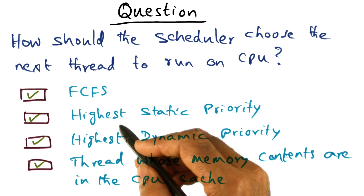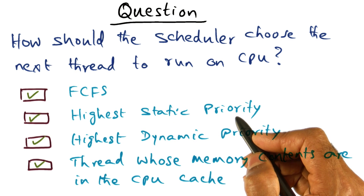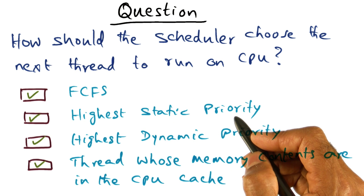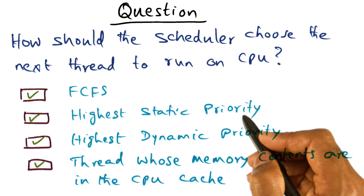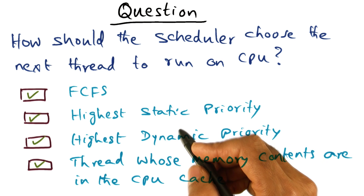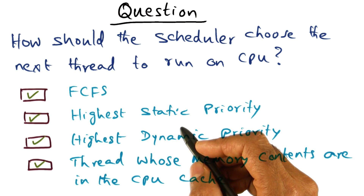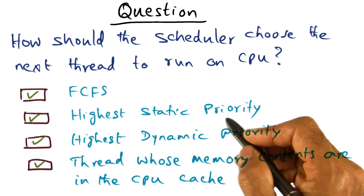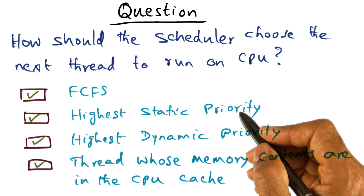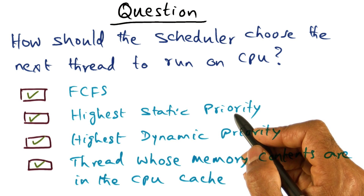The second choice is: somebody paid a lot of money to run their program, and so I'm going to give a priority that is statically assigned with every process or thread, and I'm going to pick the one that has the highest priority. So that's also a valid choice.